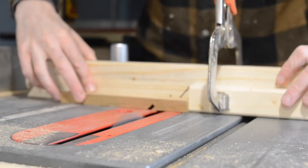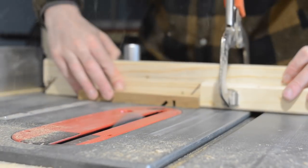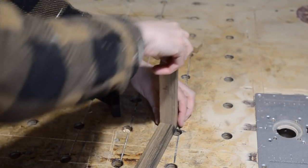With the 45 cut on both pieces, then the blade needs to go back to 90 for the other half of the cut, and then I can nibble away the waste.